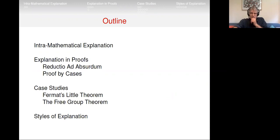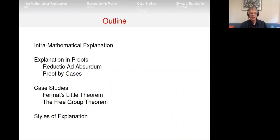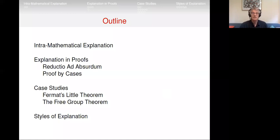Let me say a little bit about why, even for those not interested in philosophy of mathematics, this sounds like a boutique area but I think it's important more generally. A great deal of work in philosophy of science is focused on trying to come up with an account of explanation full stop. You don't want a story about explanation that works in chemistry and a different one for physics and a different one for biology — we think of scientific explanation as one thing.